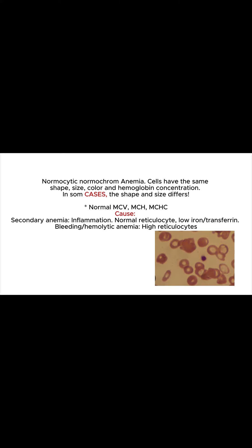With normocytic anemia, the cells have a shape and size within the reference range, but in some cases the shape and size vary between cells. This results in an average value of cell size and hemoglobin concentration still within the normal range. Normocytic normochromic anemia most commonly occurs as a result of chronic infections and systemic diseases, as most normocytic anemias appear to be the outcome of impaired cell production.